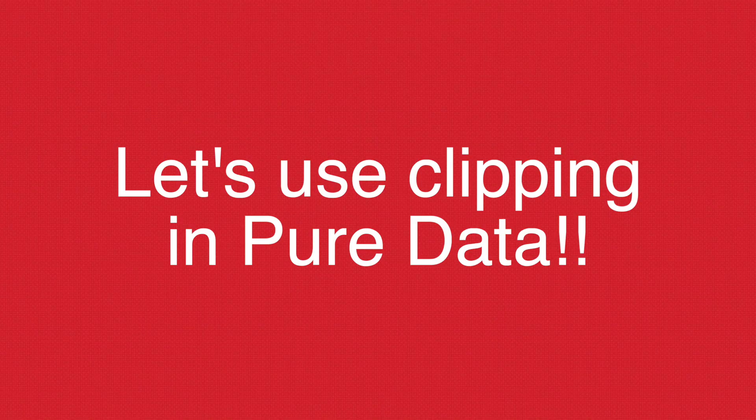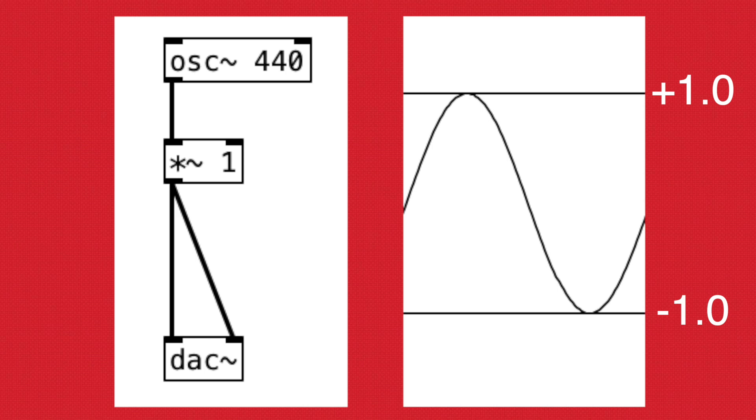So let's see what clipping looks and sounds like. Here we have a sine tone with minimum and maximum output gain of negative 1.0 and positive 1.0. And this is what the waveform looks like.